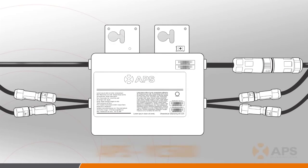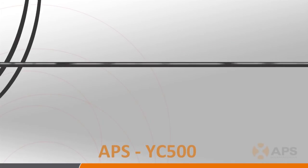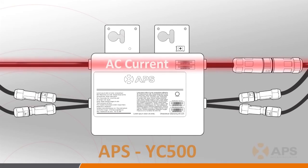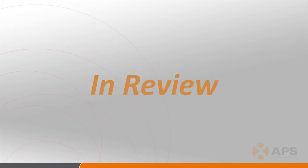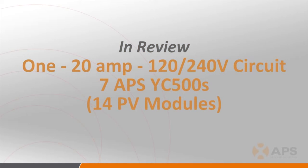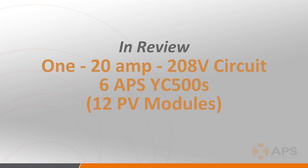Here is a picture of the YC500 showing its associated cabling. It's important to note that the YC500 does not use a trunk cable for AC distribution, but rather are daisy-chained together in series. The top cables in the photo are the AC cables, and the bottom four — two on each side of the inverter — are the DC input cables. As review, the maximum number of units per 120-240 volt, 20-amp circuit is 7, or a total of 14 PV modules, and the maximum number of units per a 208-volt, 20-amp circuit is 6, or a total of 12 PV modules.